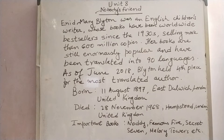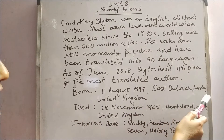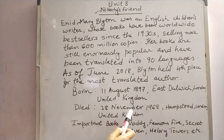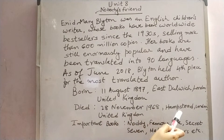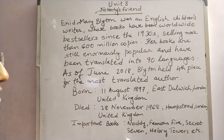She was born on 11th August 1897 in East Dulwich, London, United Kingdom, and she died on 28th November 1968 in Hampstead, London, United Kingdom. Some important books written by her include Noddy, Famous Five, Secret Seven, Mallory Towers, and more.